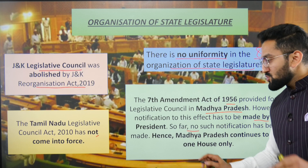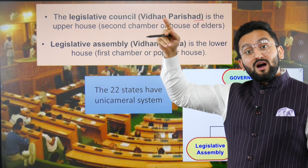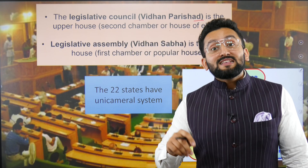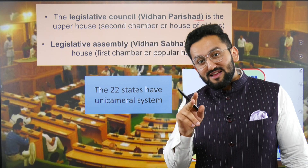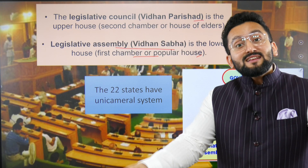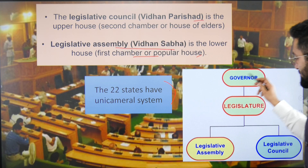The legislative council (Vidhan Parishad) is the upper house and second chamber. Bills like money bills are first introduced only in the legislative assembly. The legislative assembly is the lower house, also called the popular house, because its members are directly elected by the people. In contrast, members of the legislative council are indirectly elected or nominated.